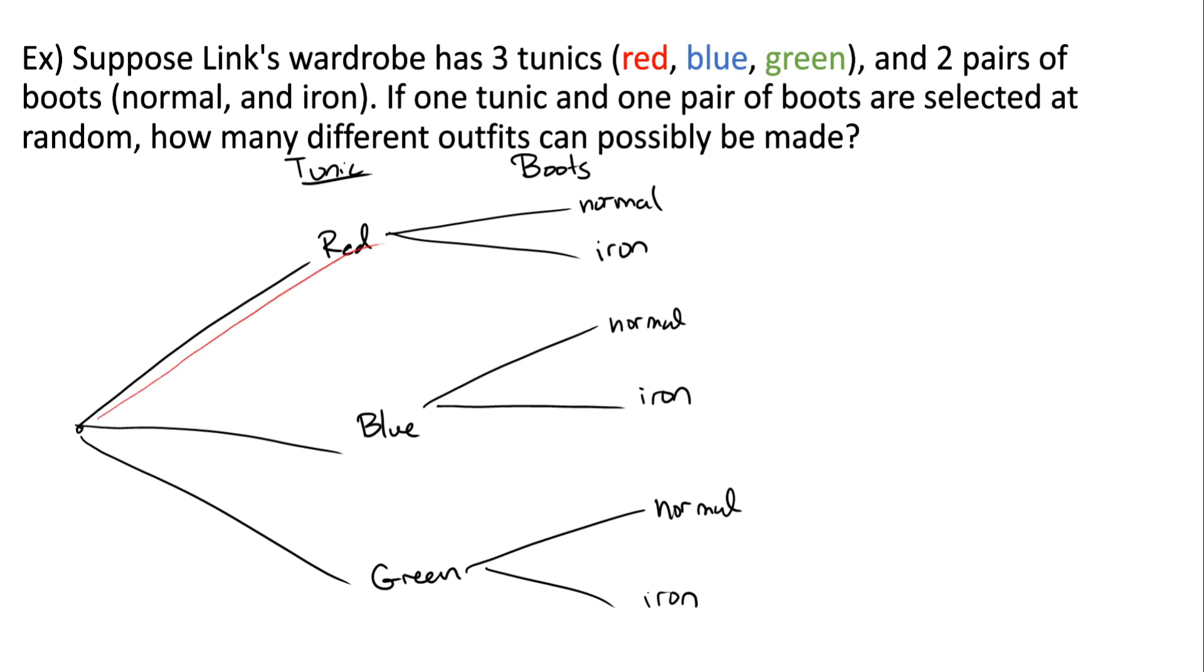So we could choose red and then normal. We could choose red and then iron. We could choose blue and normal. We could choose blue and iron. We could choose green and normal. Or we could choose green and iron.